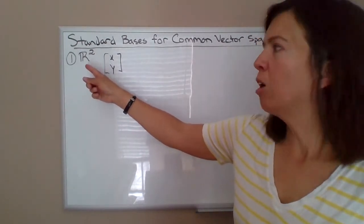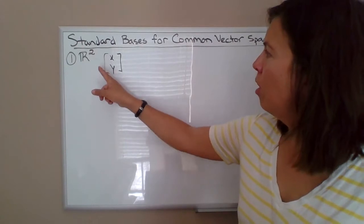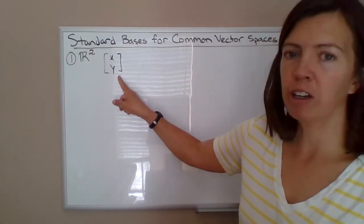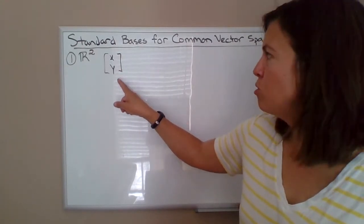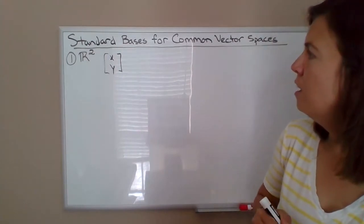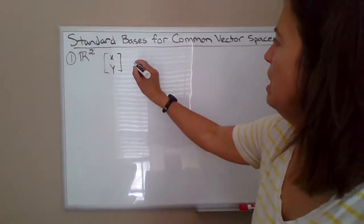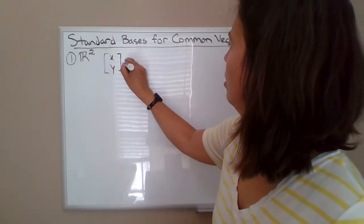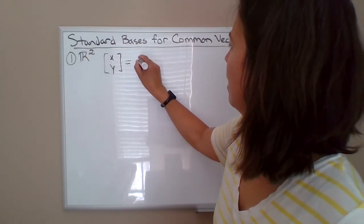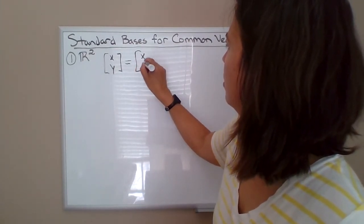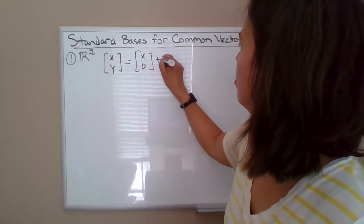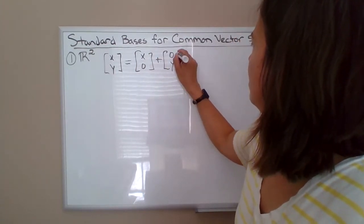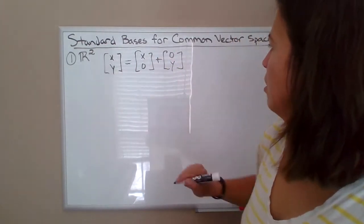So first example, let's take R². R² refers to the collection of all vectors with two entries here, x and y. So anything in R² can be broken down as x,0 plus 0,y. That would certainly add up to x,y.